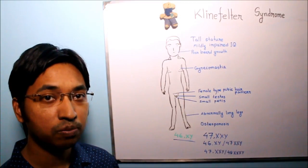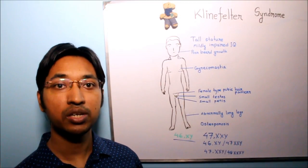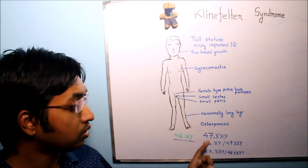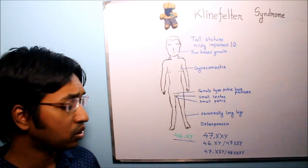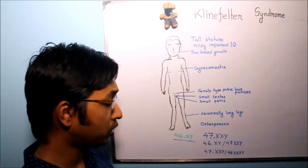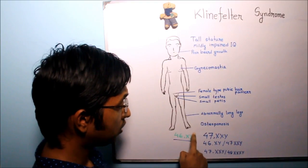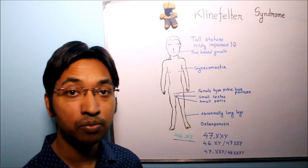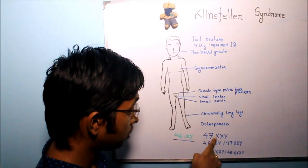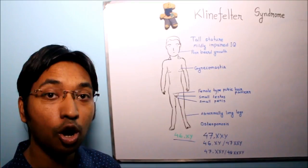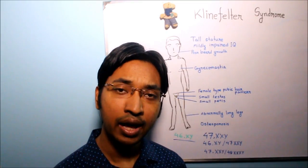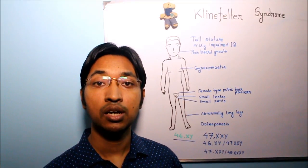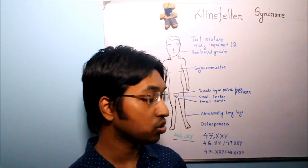In 90% of cases the karyotype of an individual with Klinefelter syndrome will be 47XXY. Comparing this to the normal karyotype, we can see there is presence of an extra copy of X chromosome. And sometimes there may be presence of more than one extra copy of X chromosome as well.